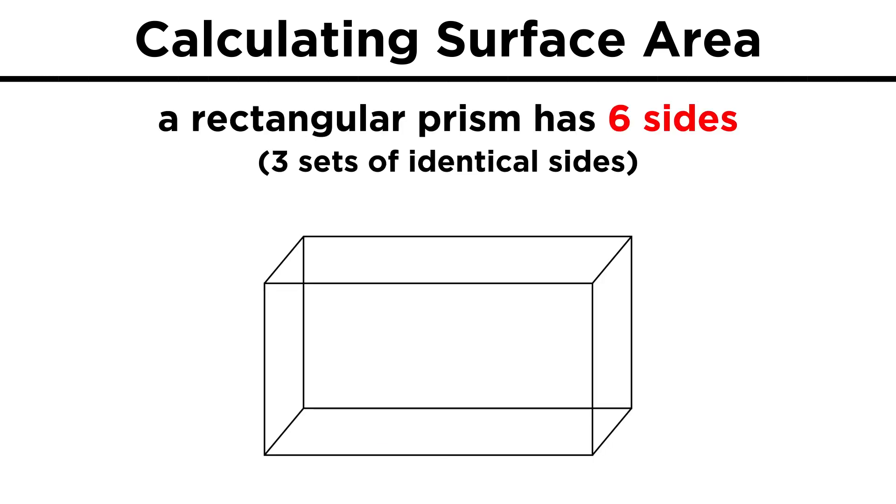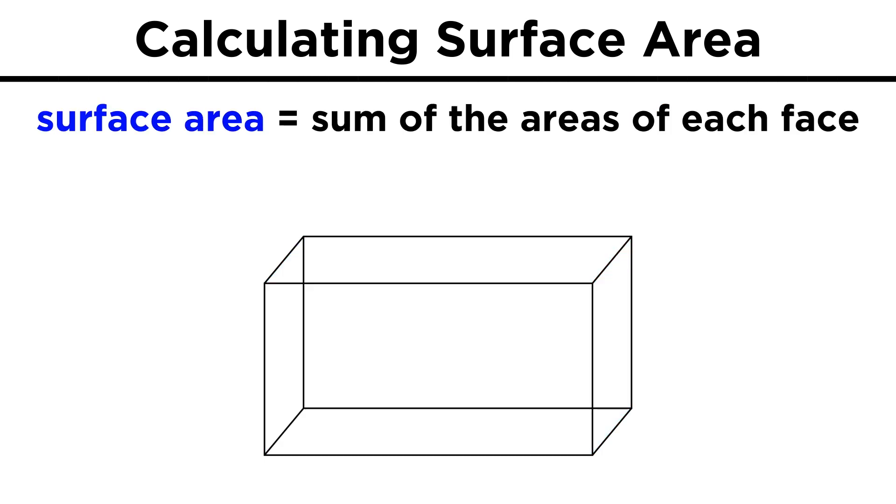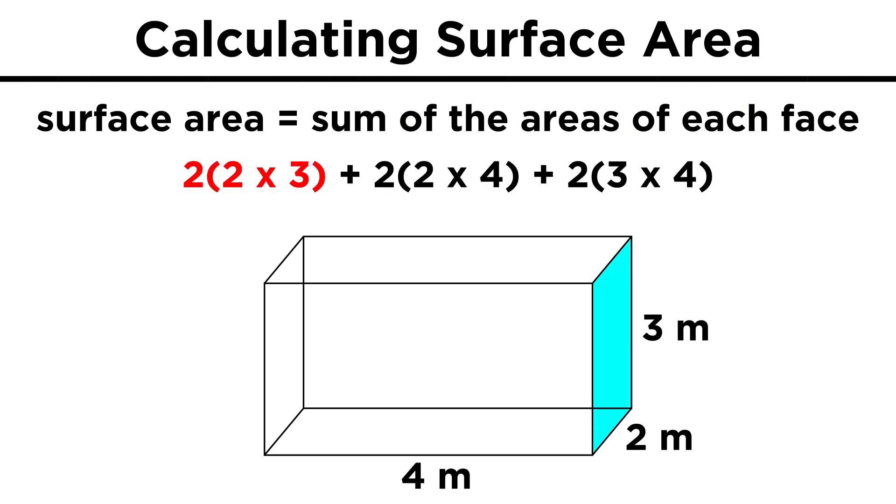Take something like a rectangular prism. This has six sides. These two are the same, these two are the same, and these two are the same. To get the surface area, we just have to get the area of each rectangle and add them all up. Given the dimensions of two by three by four meters, we get two rectangles that are two by three, two that are two by four, and two that are three by four. That's two times six, plus two times eight, plus two times twelve, which equals fifty-two square meters.